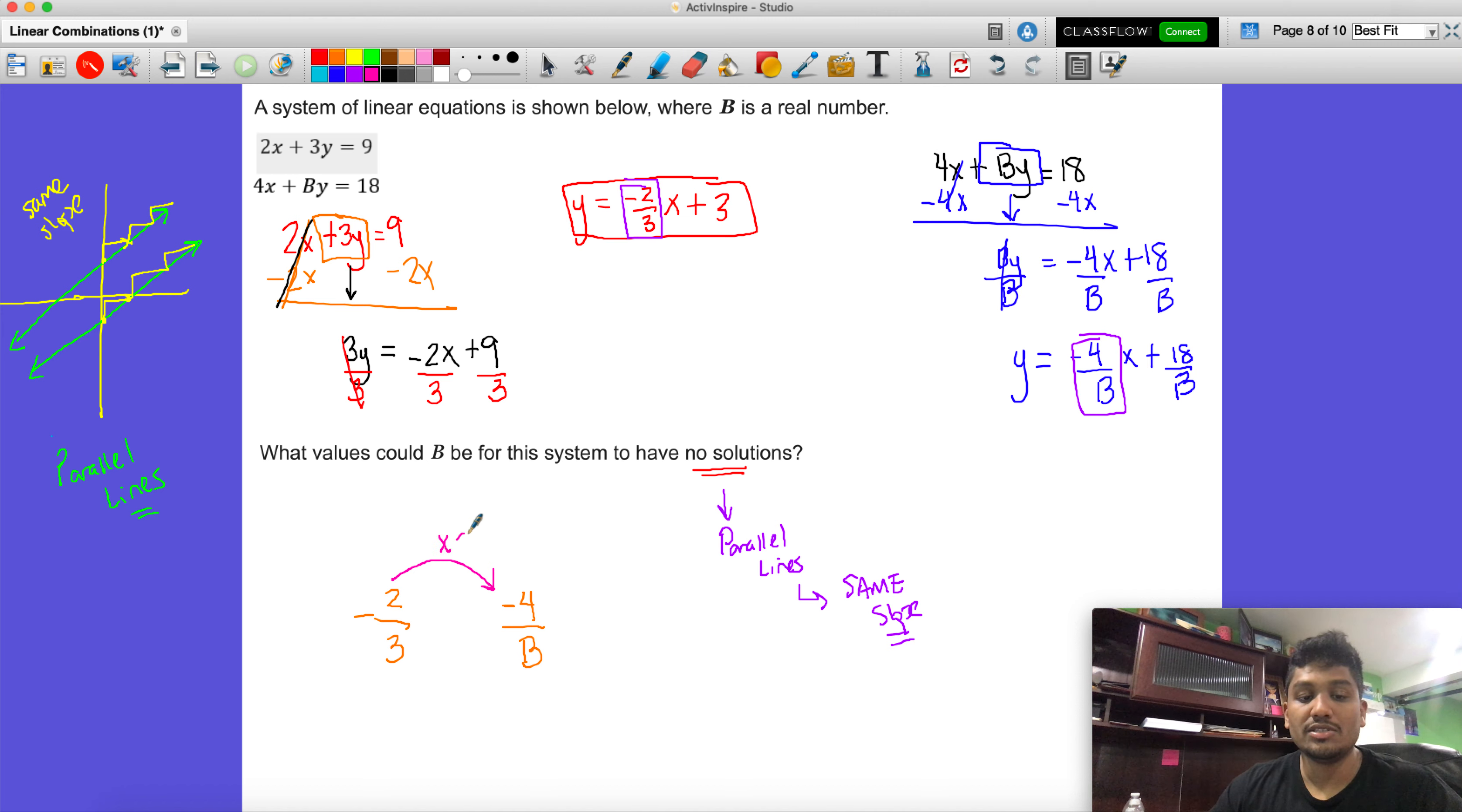Well if you multiply by 2, negative 2 times 2 gives you negative 4. So since everything's equal in math, we'd also multiply this by 2. So 3 times 2 would give us 6, making it that b has to equal 6.